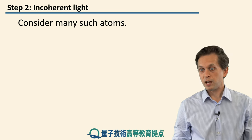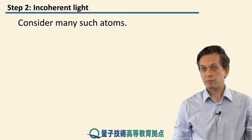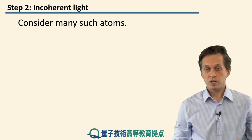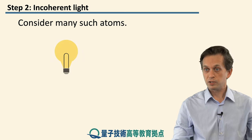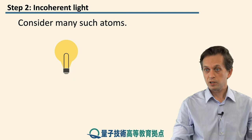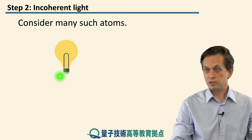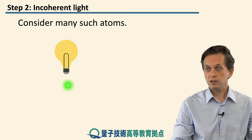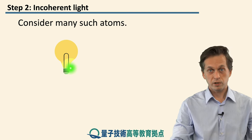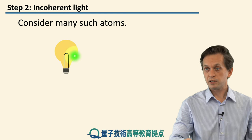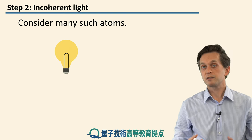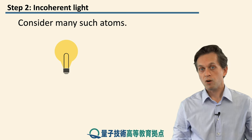Now you can ask yourself, what happens if we have many of these photons? Well, basically what you have is a light bulb. So you've got some gas inside the light bulb and a filament. If you turn on the switch, the electricity runs through the filament and heats it up, and it starts giving off light.